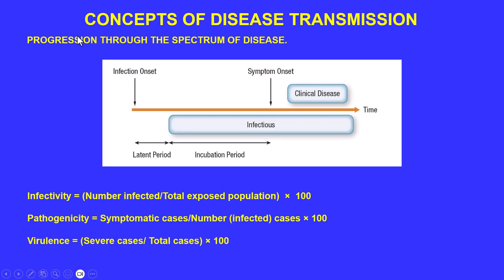As we look at the spectrum of disease, several terms become clear. Infectivity is defined as the number infected over the total exposed population times 100. Pathogenicity is symptomatic cases over the number of infected cases times 100. Virulence is the number of severe cases over the total cases times 100. You have a latency period and an incubation period; as soon as you become infectious to others, you shift from latency to incubation.